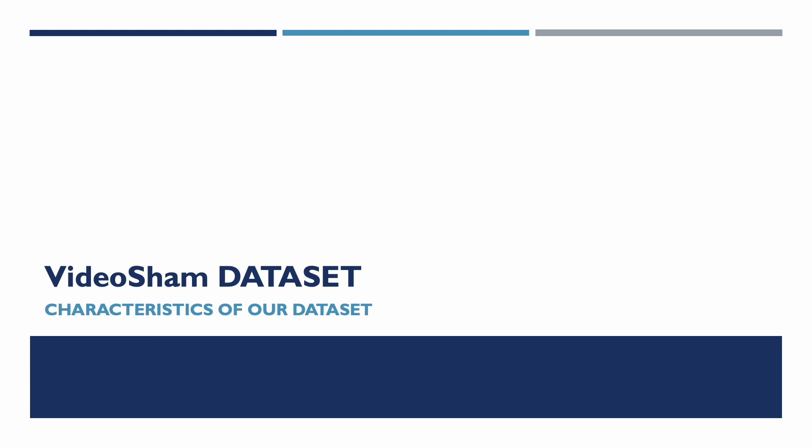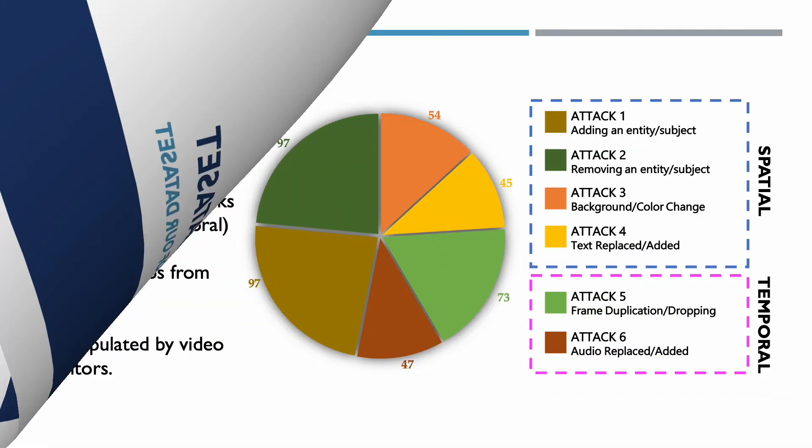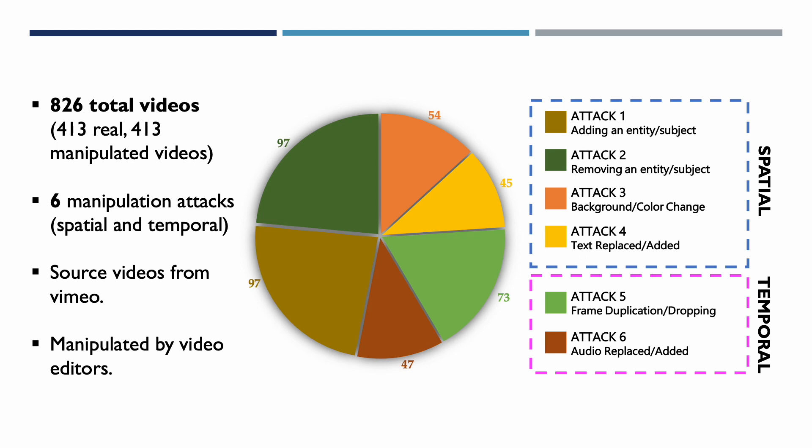We now present our dataset, VideoSham. VideoSham consists of 826 videos: 413 real videos and 413 manipulated videos. The videos have been manipulated using one of six manipulation attacks, which are either spatial or temporal in nature. We obtained our source videos from the online video website Vimeo, using only videos attributed with a CCY license. The videos were edited by professional video editors hired on Upwork, who were well versed with Adobe After Effects, the tool used for editing and creating VideoSham.